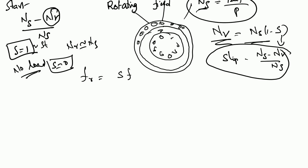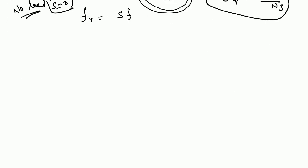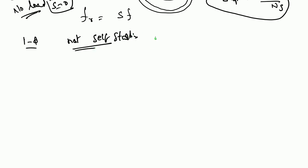The three-phase induction motor is self-starting. However, a single-phase induction motor is not a self-starting machine — this is very important. To make it self-starting, we split the winding into a main winding and an auxiliary winding with a phase difference of 90 degrees. Types include split-phase, capacitor start, and capacitor start-capacitor run motors.